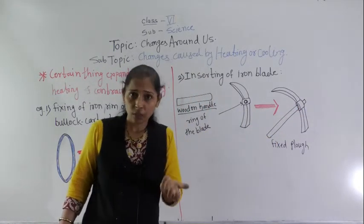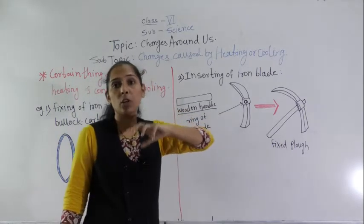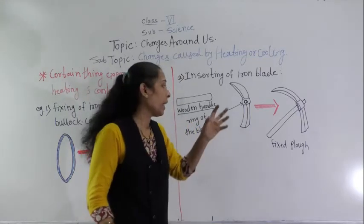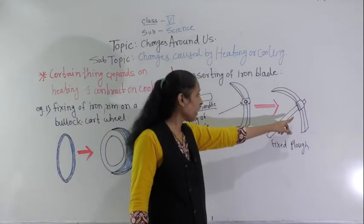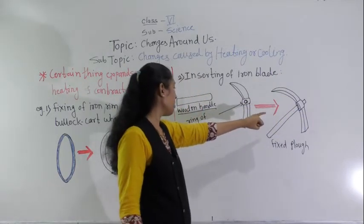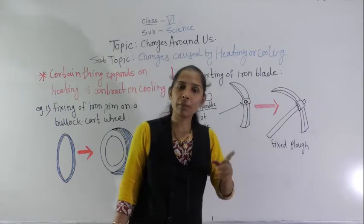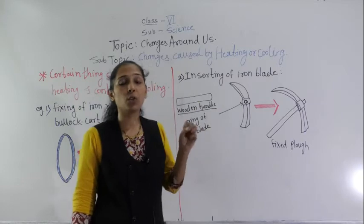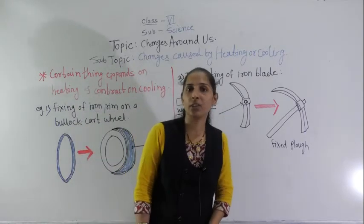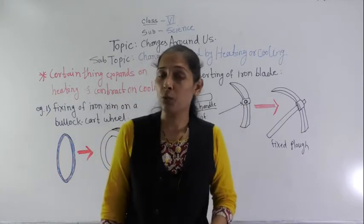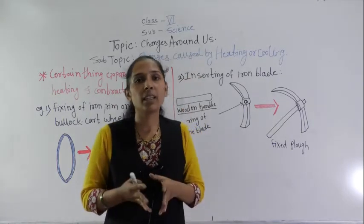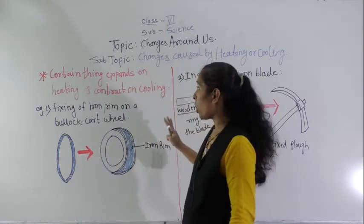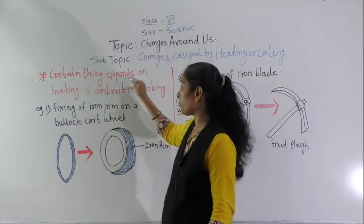After fitting the wooden handle, we pour water over it. Due to the water it cools and contracts in size, and the wooden handle gets fixed properly into the ring of the blade. The same process works for a spade. This property — certain things expand on heating and contract on cooling — is used to fix wooden handles into different agricultural implements.